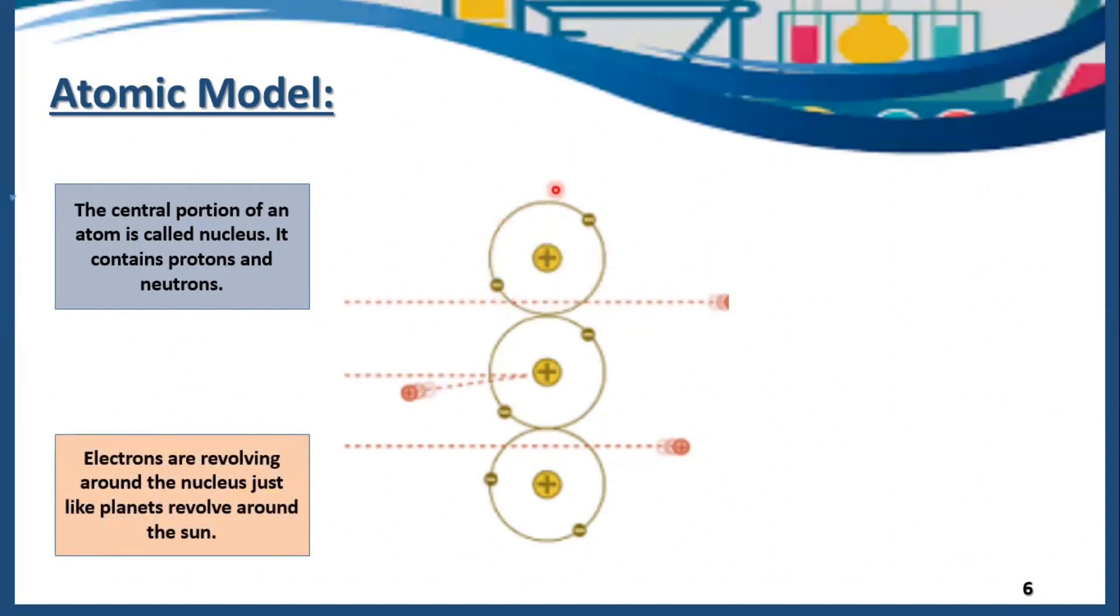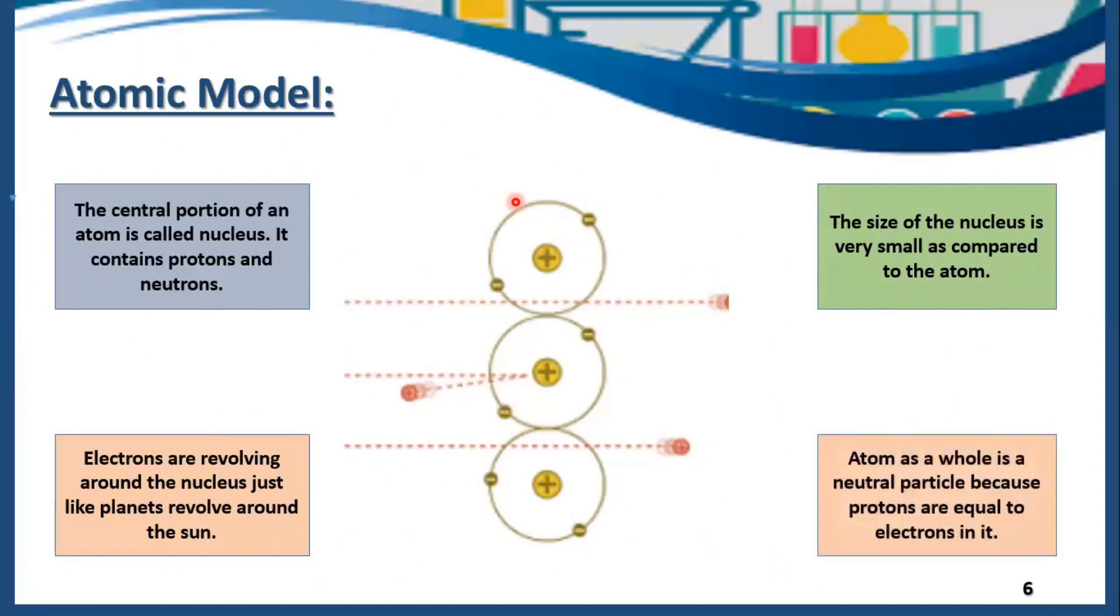Electrons are revolving continuously around the nucleus with high speed. The size of the nucleus is very small as compared to the atom. Atom as a whole is a neutral particle because protons are equal to electrons in it. Protons and electrons both are equal and have opposite charges. Both charges cancel the effect of each other. That's why the atom as a whole is neutral.